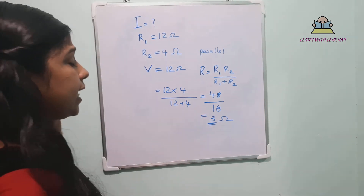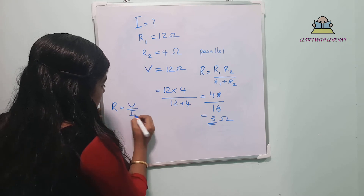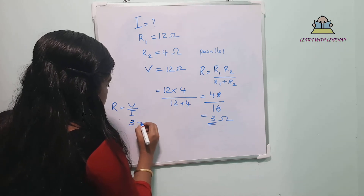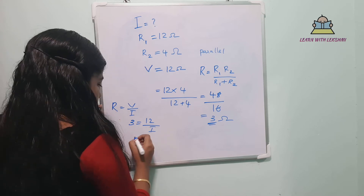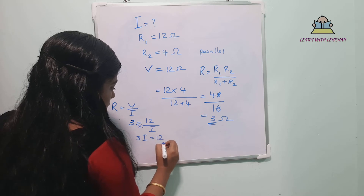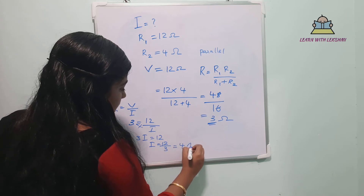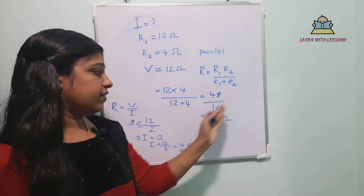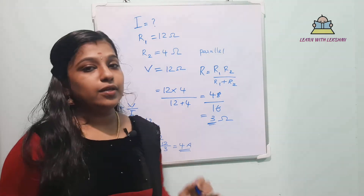Now applying Ohm's law: R = V/I. Substituting: 3 = 12 divided by I. Cross multiplying: 3I = 12. Therefore I = 12 divided by 3 = 4A current flows. That is how we use effective resistance in parallel and then apply Ohm's law to find the total current.